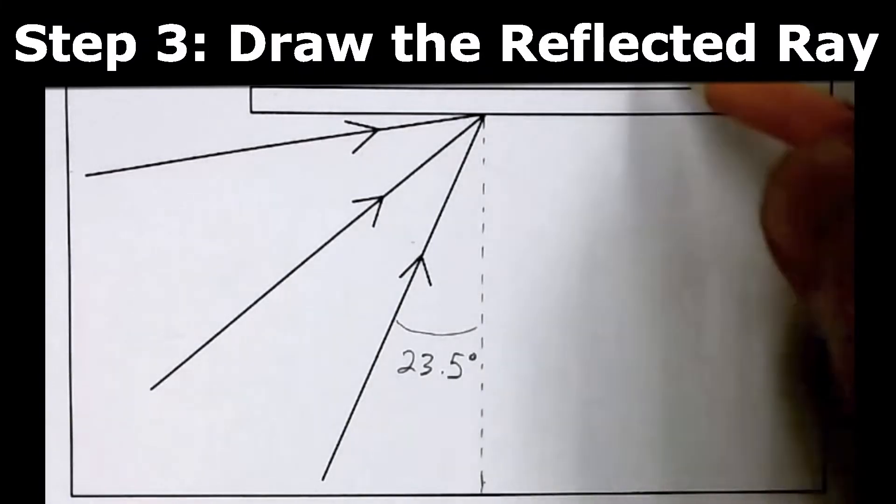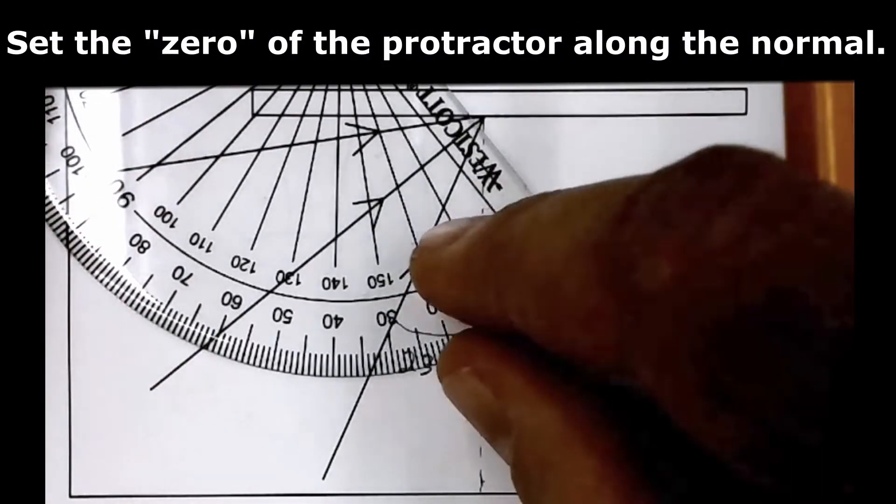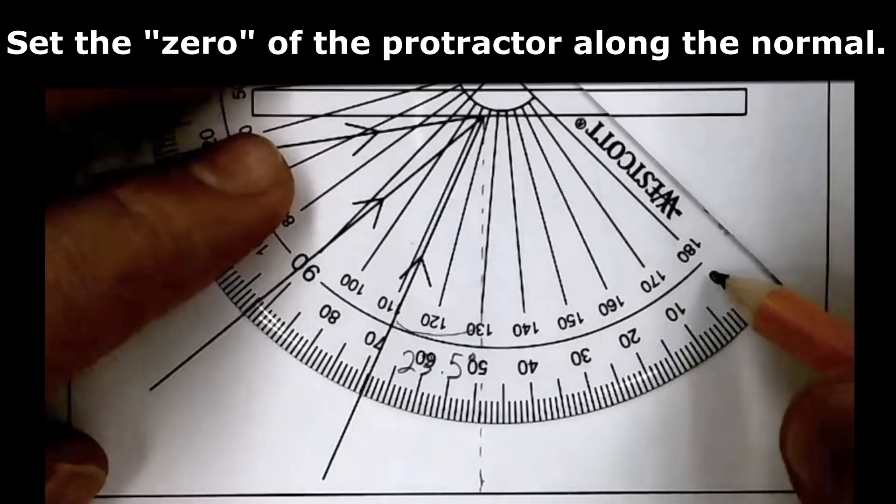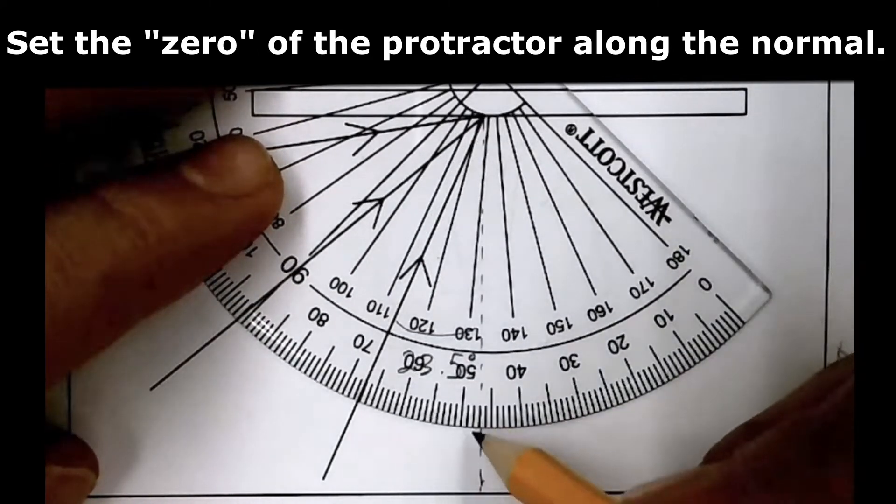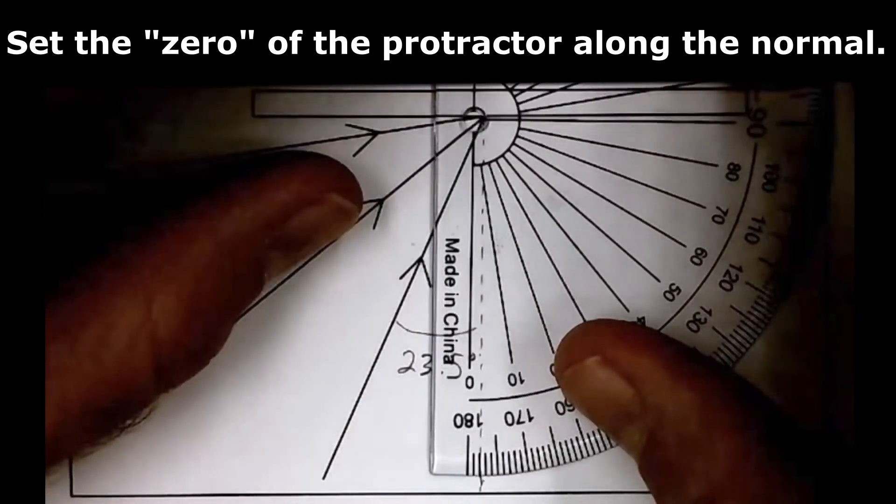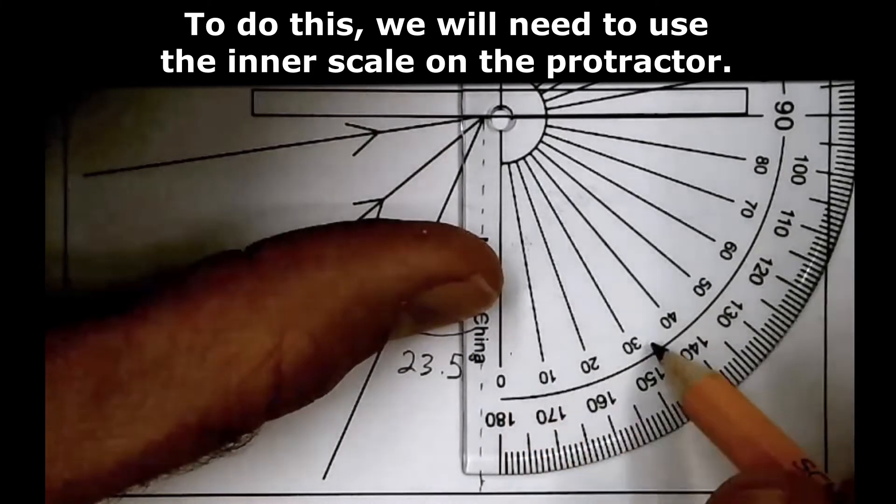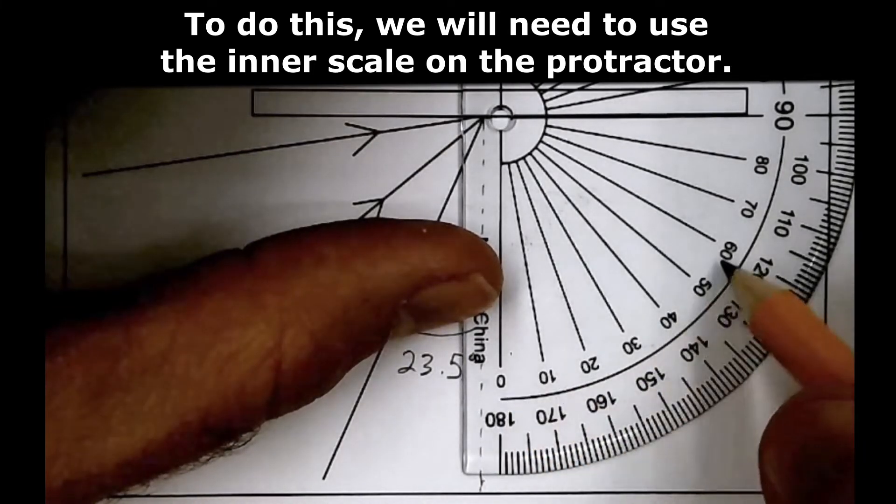Let's draw the reflected ray on this side of the normal. The angle of reflection is going to be the same, 23.5 degrees. Let's set that up. Again, we want to have the zero of our protractor along the normal. That means we'll have to orient it this way. Now we're going to be reading off of the inner scale on the protractor.